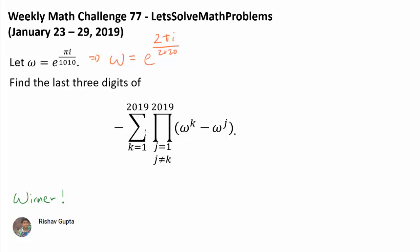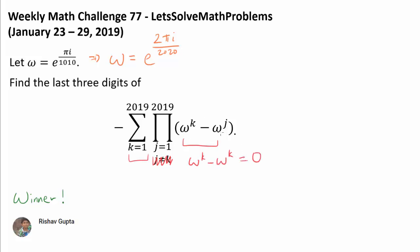The expression is minus the summation from k equals 1 to 2019 of the product from j equals 1 to 2019, where j is not equal to k, of omega to the k minus omega to the j. If we disregard this condition and drop it, then for every k we would have omega to the k minus omega to the k, which is 0 in the product. Summing up the zeros, that's trivially 0 — a boring problem, and that's not the case here. We have j not equal to k, so let us begin.